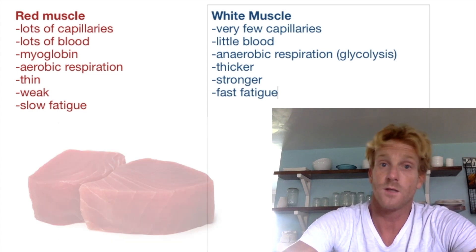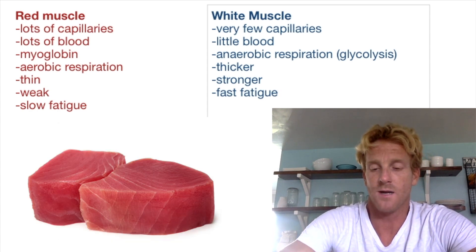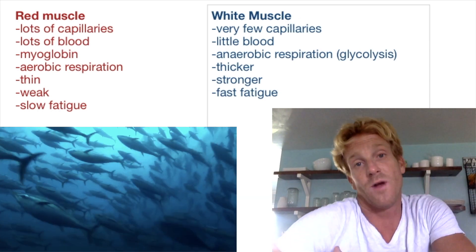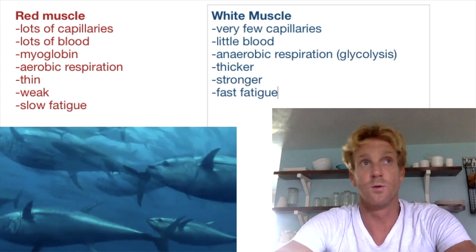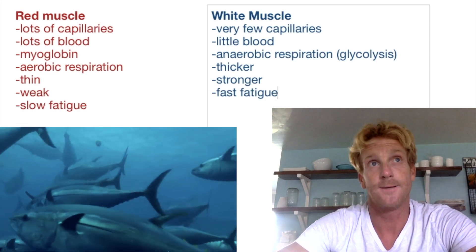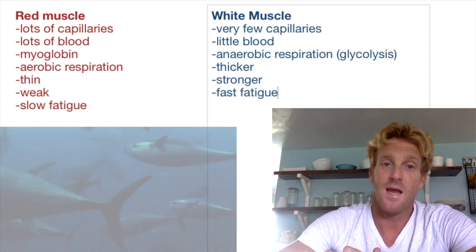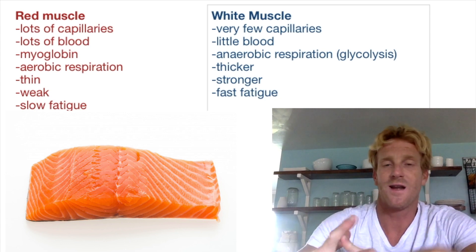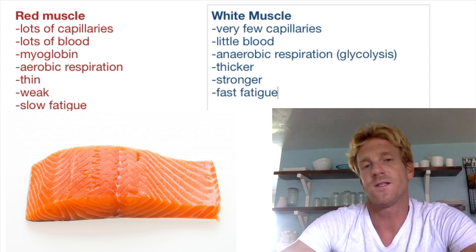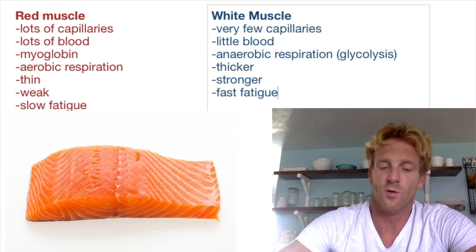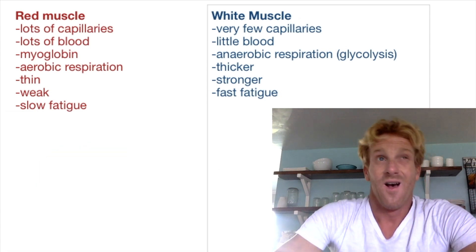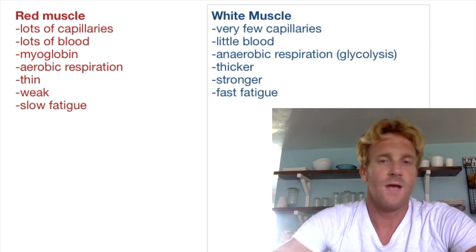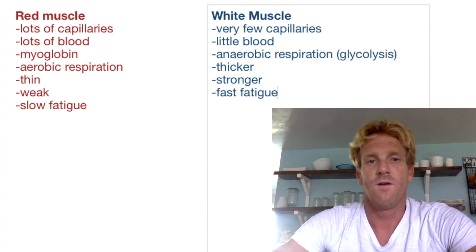Tuna, on the other hand, is red in color because it swims around all day — it has a much higher density of red muscle fibers, which allow it to cruise the open ocean for a long period of time. Salmon is a funny example — it's pink in color because the red and white muscles are intertwined, which is unique to that group of fish. Hopefully that clears up the different types of muscle fibers.